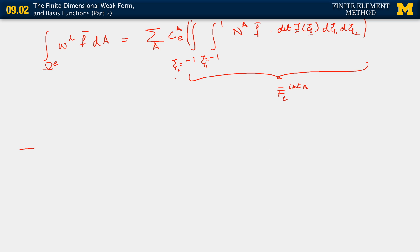The very last term is the integral over the Neumann boundary: the integral over partial omega sub N of w_h times j_n ds. This one takes a little work, simply because we need to be careful about which degrees of freedom contribute to that particular boundary from each element, and also how we carry out the integral along the curve that ds implies. We'll come back and do that in the next segment.